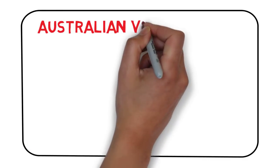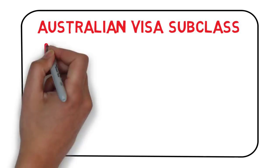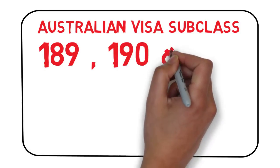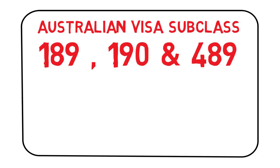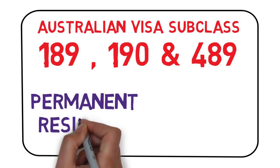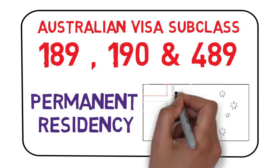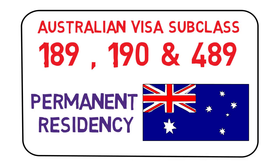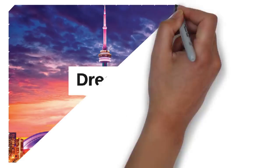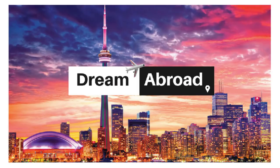In this video I will be talking about Australian visa subclass 189, 190, and 489. These three are super important and it's very important to know about these three visas if you want to apply for permanent residency of Australia. I'll talk about the details and also tell you the processing times for each of these visa subclasses.